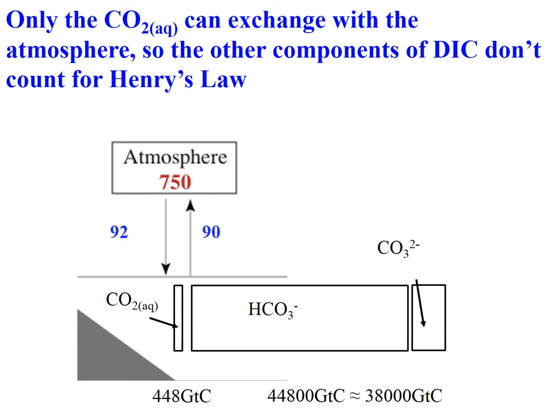That's not enough, because from the previous slide we know the actual figure is 38,000 gigatons. The reason is that only 1% of the carbon in the ocean is CO2; the other 99% is dissolved bicarbonate and carbonate ions. When you account for that other 99%, you get about 44,800 gigatons of carbon — close to the actual 38,000. This rough calculation helps us understand why the ocean carbon stock is so large.